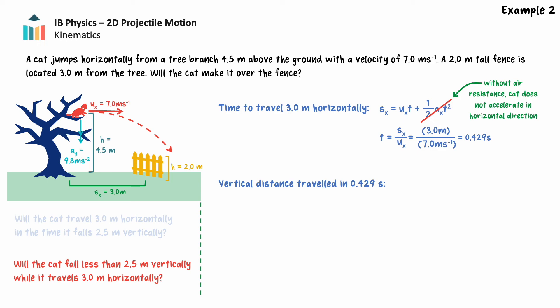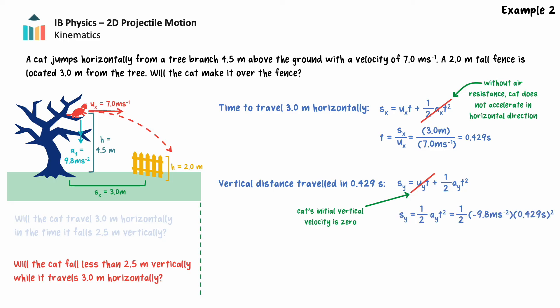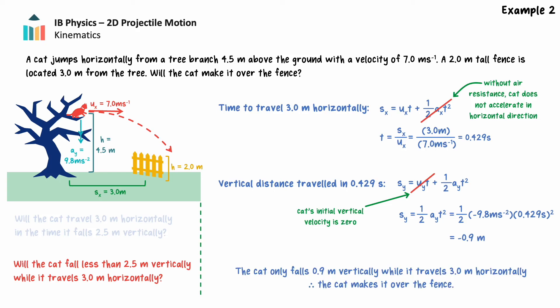Now we can determine how far the cat will fall vertically in 0.429 seconds. The cat does not have an initial vertical velocity, but does accelerate downward due to gravity as it falls. The cat's vertical displacement equals the product of initial velocity and time plus 1/2 the product of acceleration and time squared. Cancelling the initial velocity term, substituting our values, and solving: in 0.429 seconds the cat falls 0.9 meters. Since the cat falls only 0.9 meters — well under the 2.5 meter threshold — it does make it over the fence.